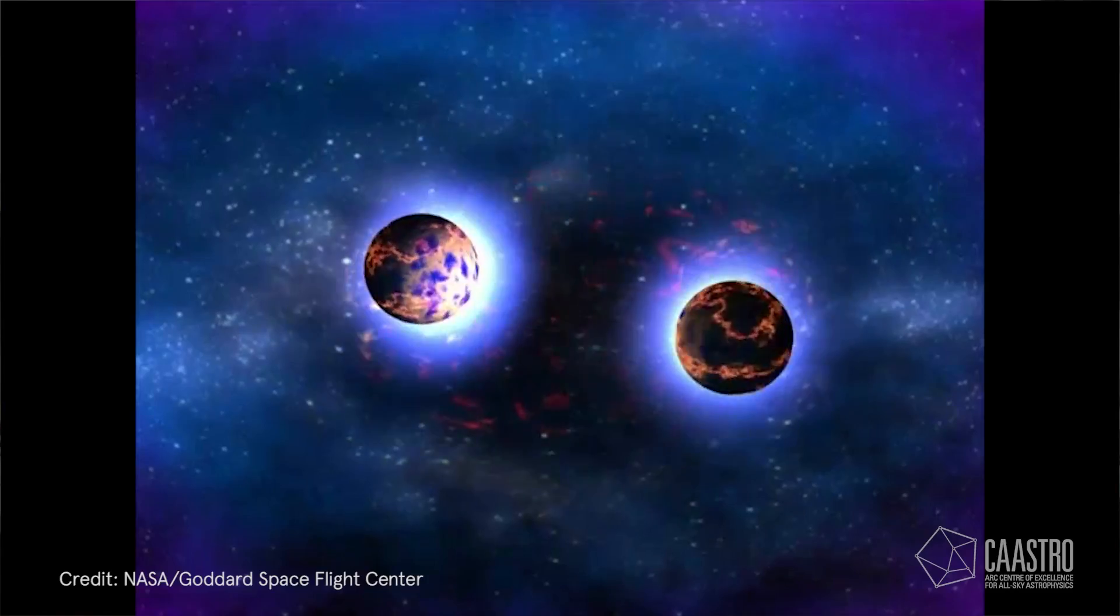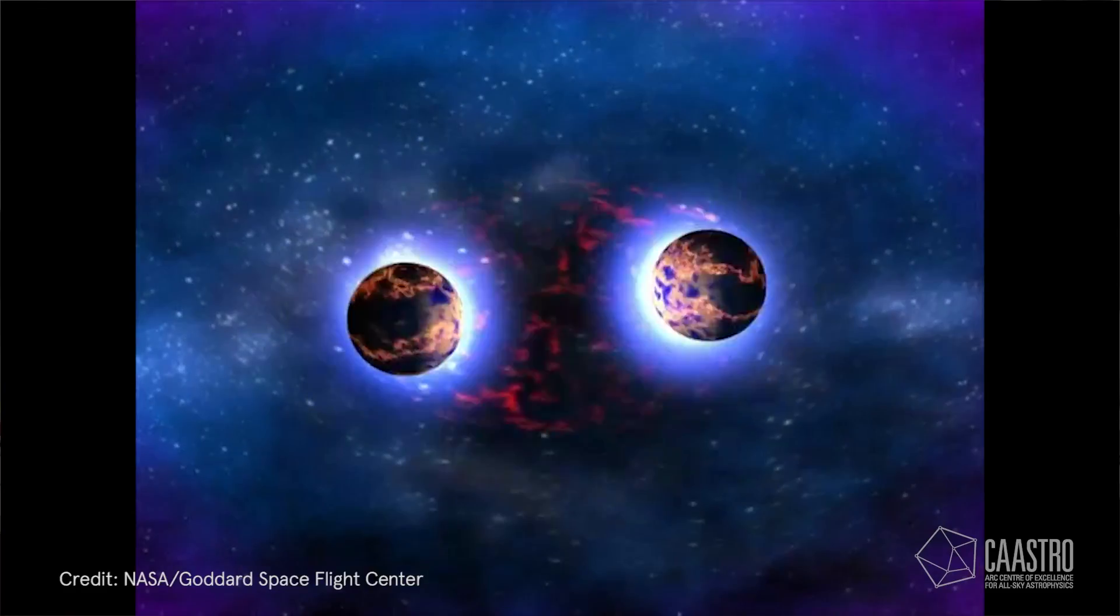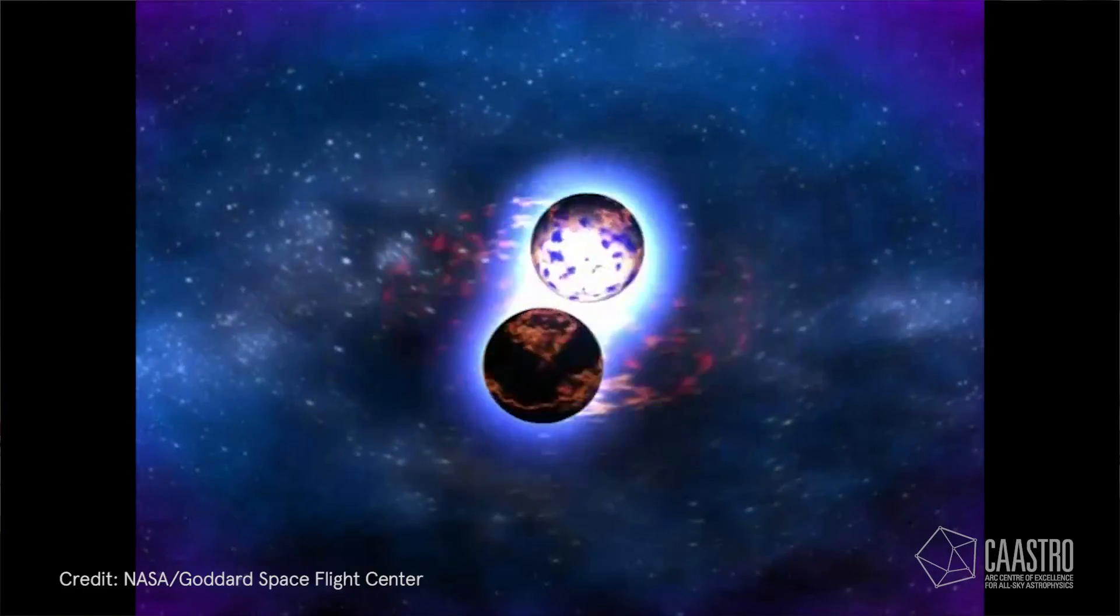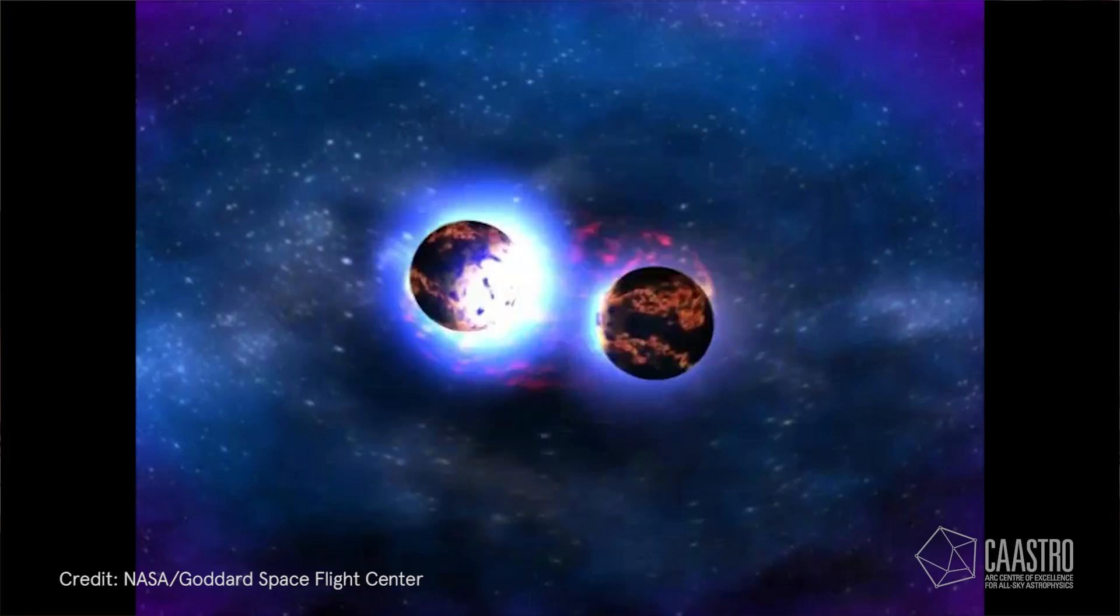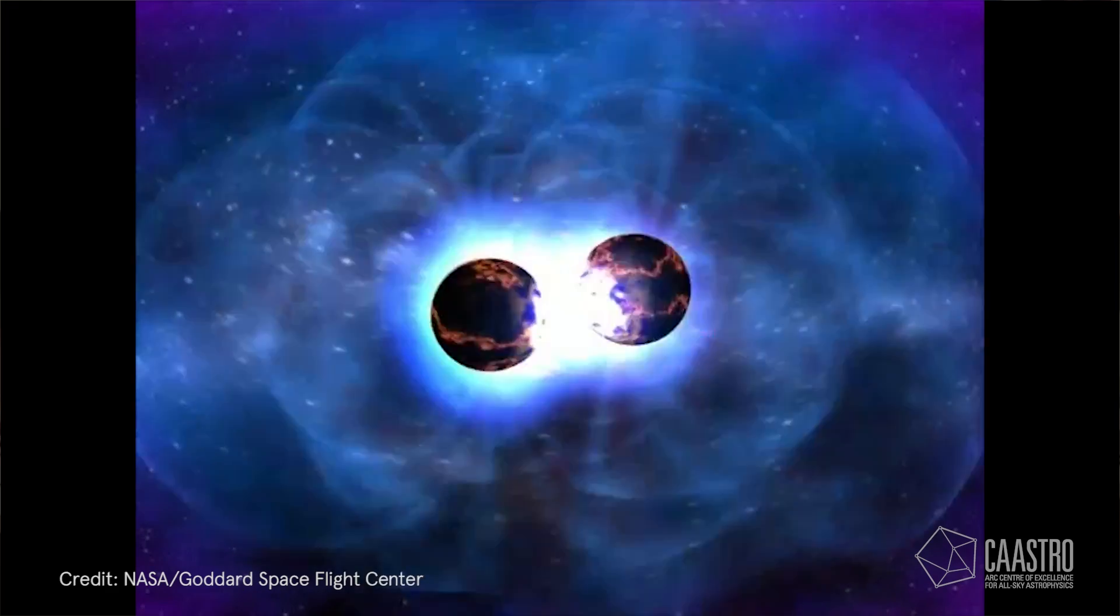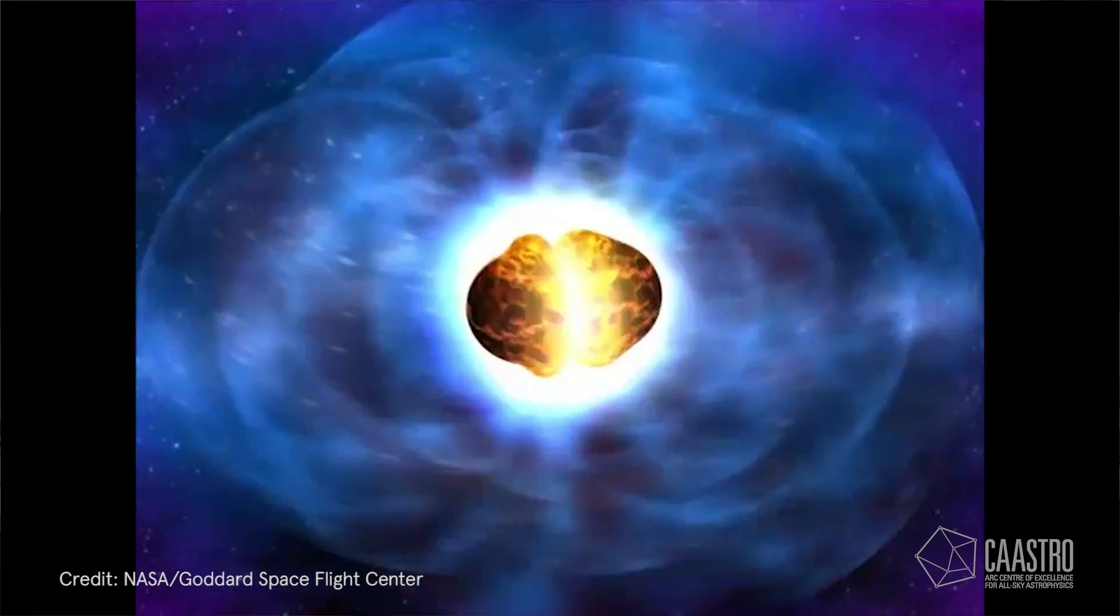Gravitational waves indicated that this was from two neutron stars merging. A neutron star is a star with about the mass of the Sun but squashed into a region about 10 or 20 kilometers across.